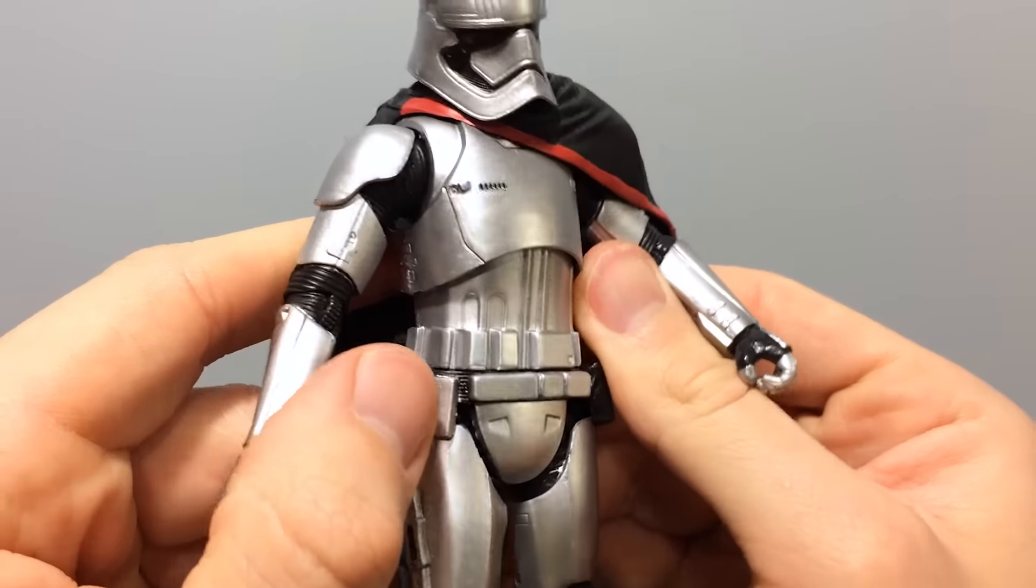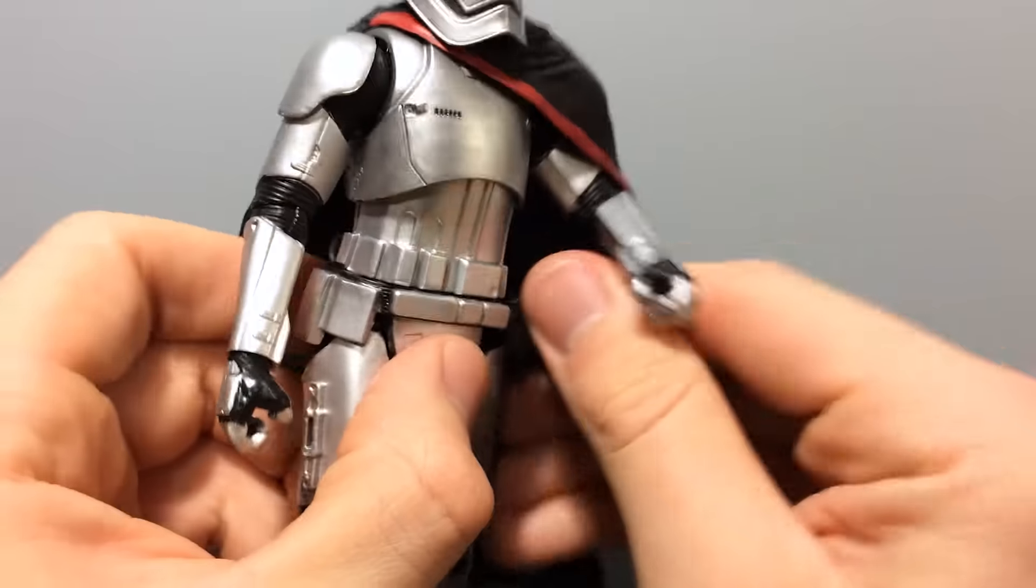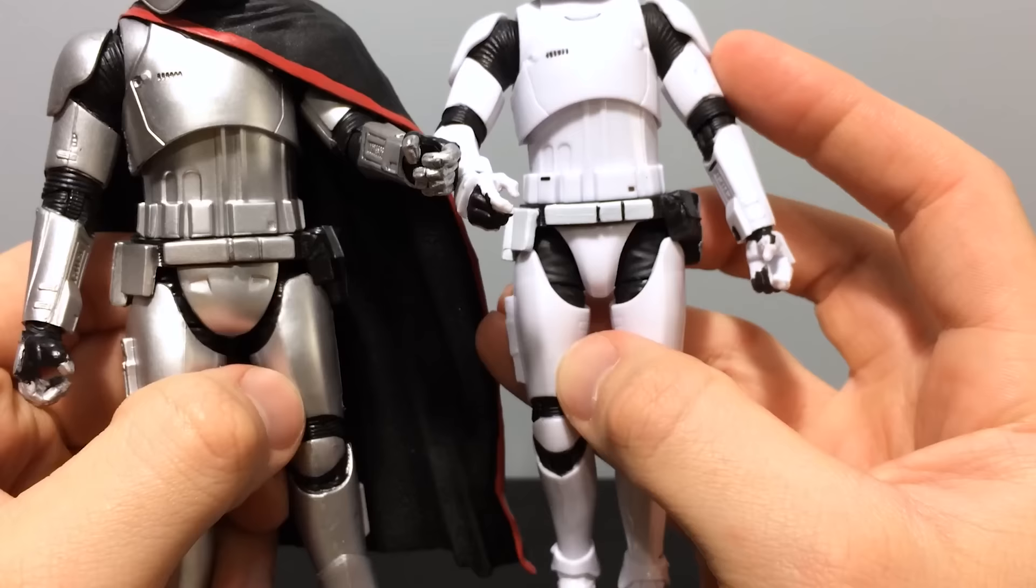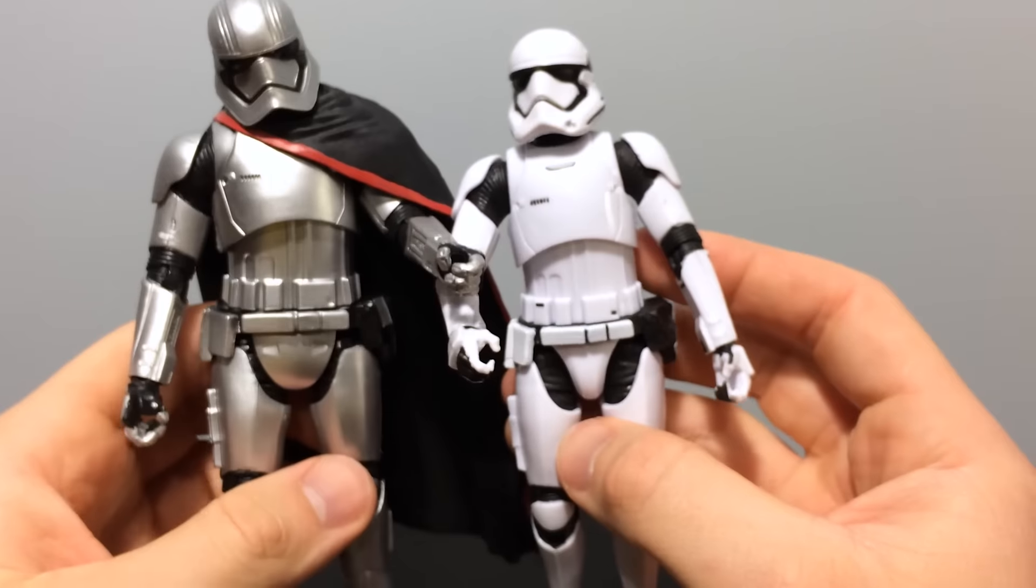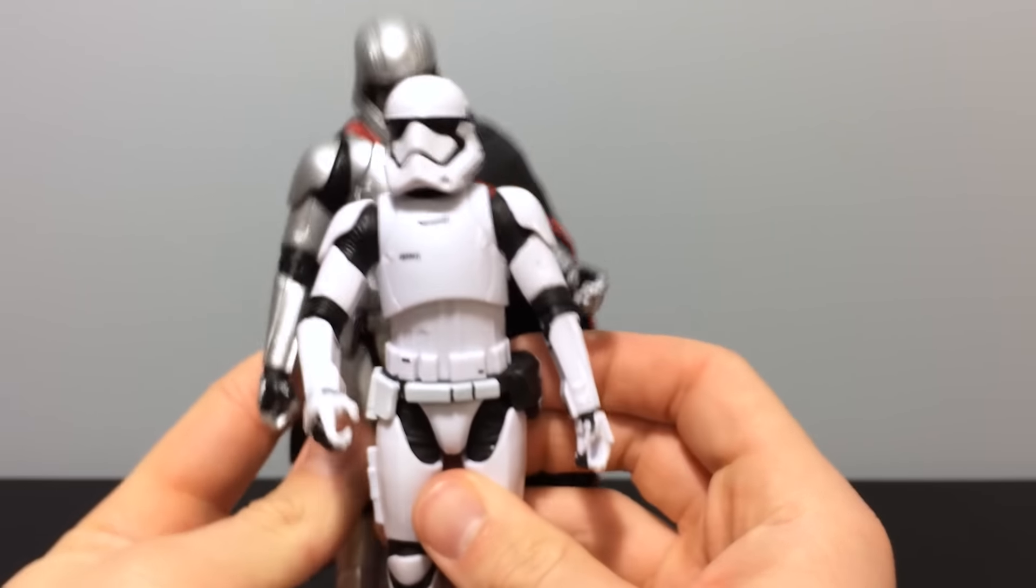You can see the detailing of this figure is pretty nice. Shoulder caps, bicep guards, the gauntlet. Looks pretty much just like a stormtrooper's gauntlet, to be honest with you. And it pretty much is. Almost the same exact belt, too. Obviously, she has a... She's bigger. She's just a monster.